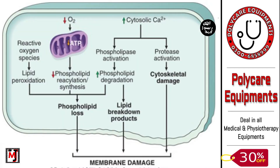In a diagram, you can see what is called the mechanical membrane damage in cell injury. When the oxygen level decreases, mitochondrial function decreases. When mitochondria decrease, phospholipid synthesis decreases. When phospholipids decrease, they are lost from the membrane, causing membrane damage. Also, when reactive oxygen species are present, phospholipids are lost from the membrane.